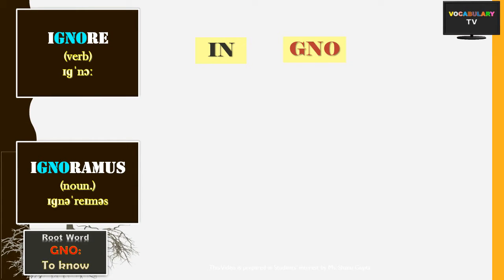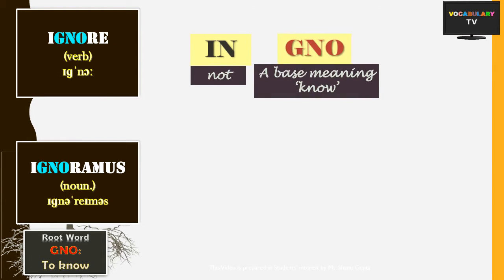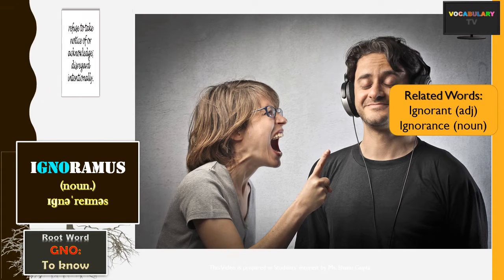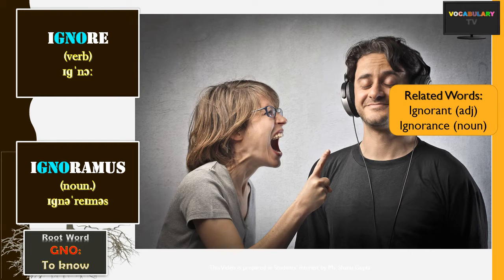If we prefix GNO with 'i' — where 'i' or 'n' means 'not' — we get the word 'ignore', which literally means to not know. To ignore someone is indeed to pretend like you don't know that person. We can see that a guy with headphones is intentionally ignoring or refusing to take notice of the female. The related words are 'ignorant', an adjective for a person who lacks knowledge or awareness, and 'ignorance', which is a noun.